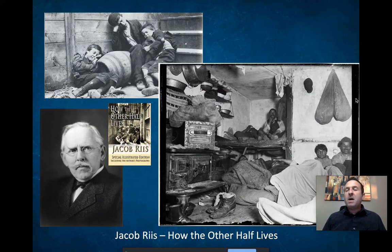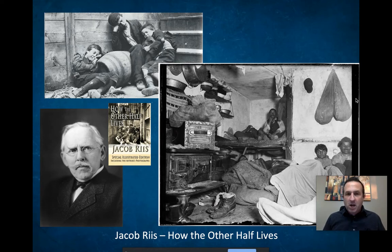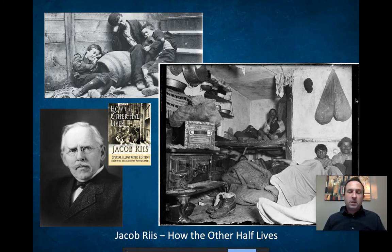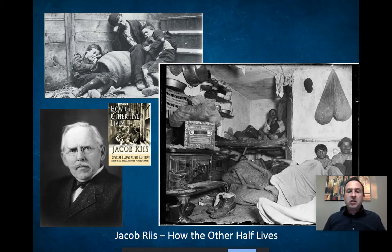What is muckraking journalism? The term is muckraking journalism, but the people who did it — these journalists — are called muckrakers because they're raking through that muck, stirring it up so other people can see it and smell it. Muckrakers were very important to the progressive era because they exposed the crap. These are reform-minded investigative journalists who sought to illustrate to the middle and upper classes the social and economic inequalities in American life.